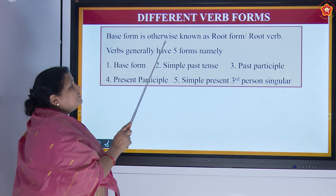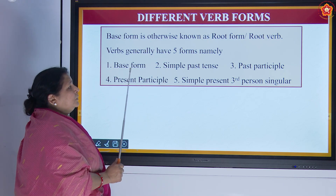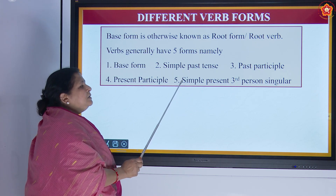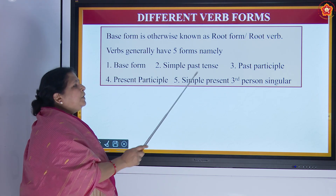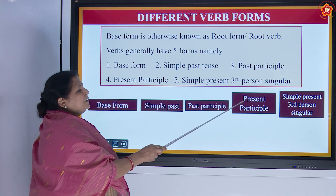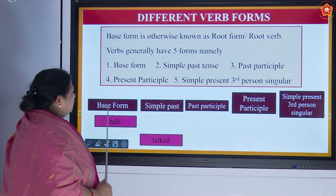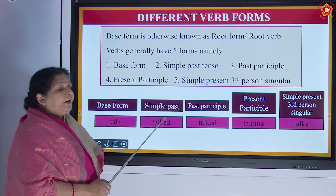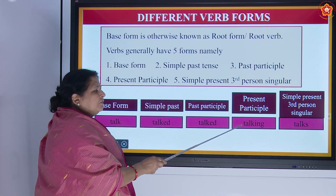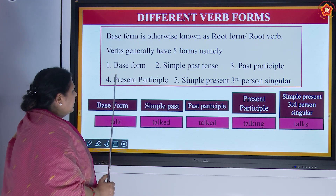The base form is otherwise known as root form or root verb. Verbs generally have five forms: base form, simple past tense, past participle, present participle, and simple present third person singular. For example, the base form of the verb is 'talk,' simple past is 'talked' (adding ed), past participle also adds ed, present participle adds ing to the base form making 'talking,' and simple present third person singular adds s giving 'talks.'